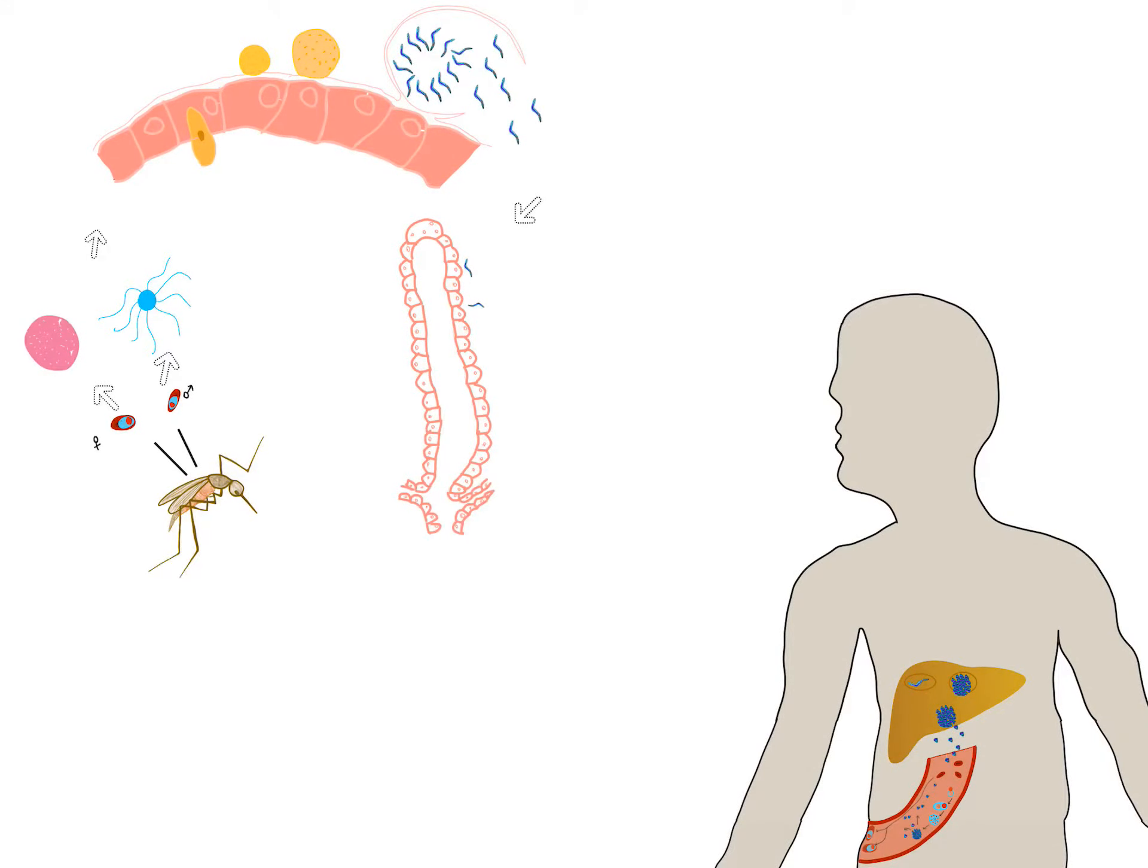Plasmodium develops both in human and female Anopheles mosquito. The parasite first enters the bloodstream of human through the bite of an infected female Anopheles mosquito, where she injects a small amount of saliva containing few haploid sporozoites.